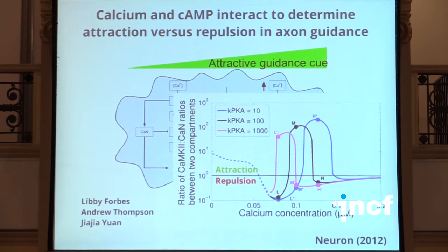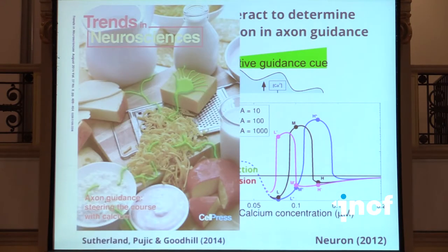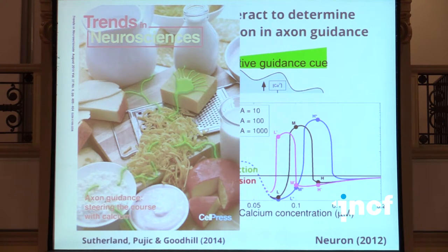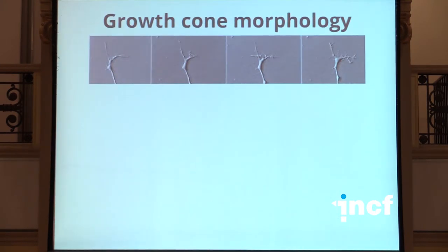We recently reviewed the role of calcium in axon guidance, which is in the current issue of Trends in Neuroscience. In the second half of the talk I want to discuss some unpublished work we've done on growth cone morphology. This is rather different — the first two parts were hypothesis-driven, whereas here we're taking a more neuroinformatics approach.